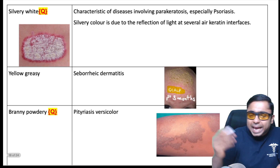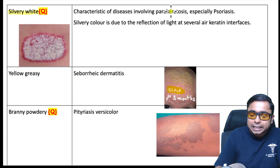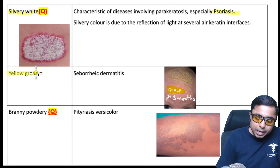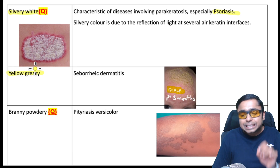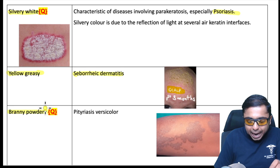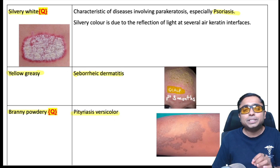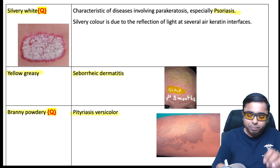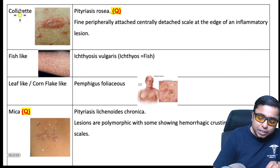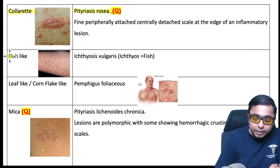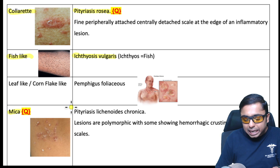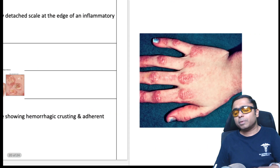Scales to remember: silvery white scales — psoriasis. Yellow greasy scales — seborrheic dermatitis. Branny powdery furfuraceous scales — pityriasis versicolor. Collarette scale — pityriasis rosea. Fish scale — ichthyosis vulgaris. Mica scales — pityriasis lichenoides chronica.